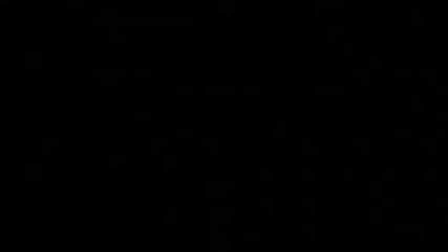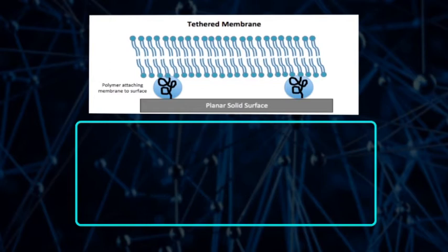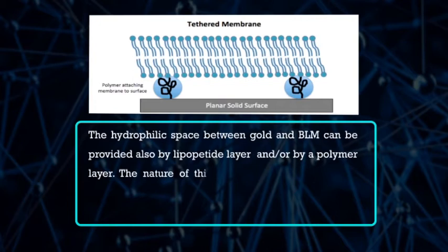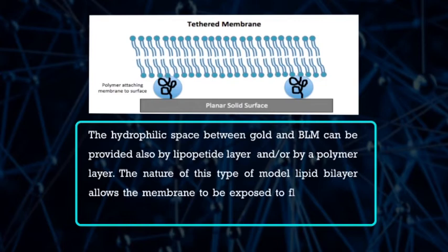This drawback has been solved by the development of so-called tethered membranes or TBLM. TBLMs are similar to SBLMs; however, instead of alkylthiols, specially synthesized molecules with a hydrophilic spacer are used for formation of the monolayer tethered to a gold support. The hydrophilic space between gold and BLM can be provided also by a lipopeptide layer and/or by a polymer layer. This allows the membrane to be exposed to fluids on both sides, more like a naturally occurring membrane. Hence, SBLMs and TBLMs, due to their high stability and unique properties that mimic the real biomembrane, can be used in nanotechnologies, especially in the development of sensitive biosensors.